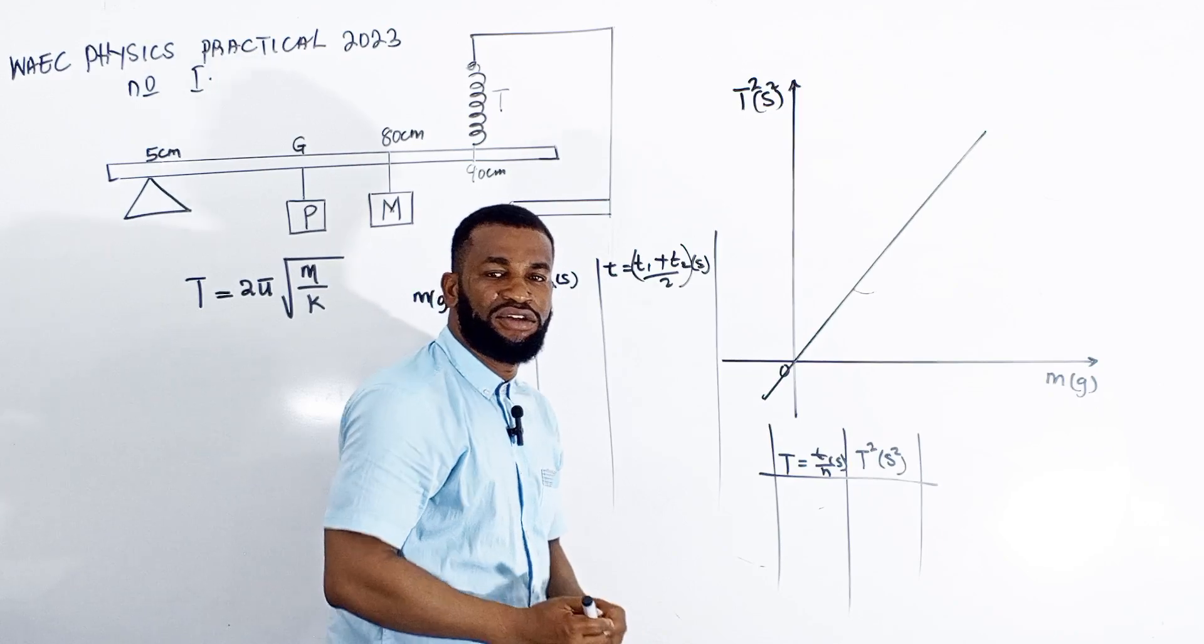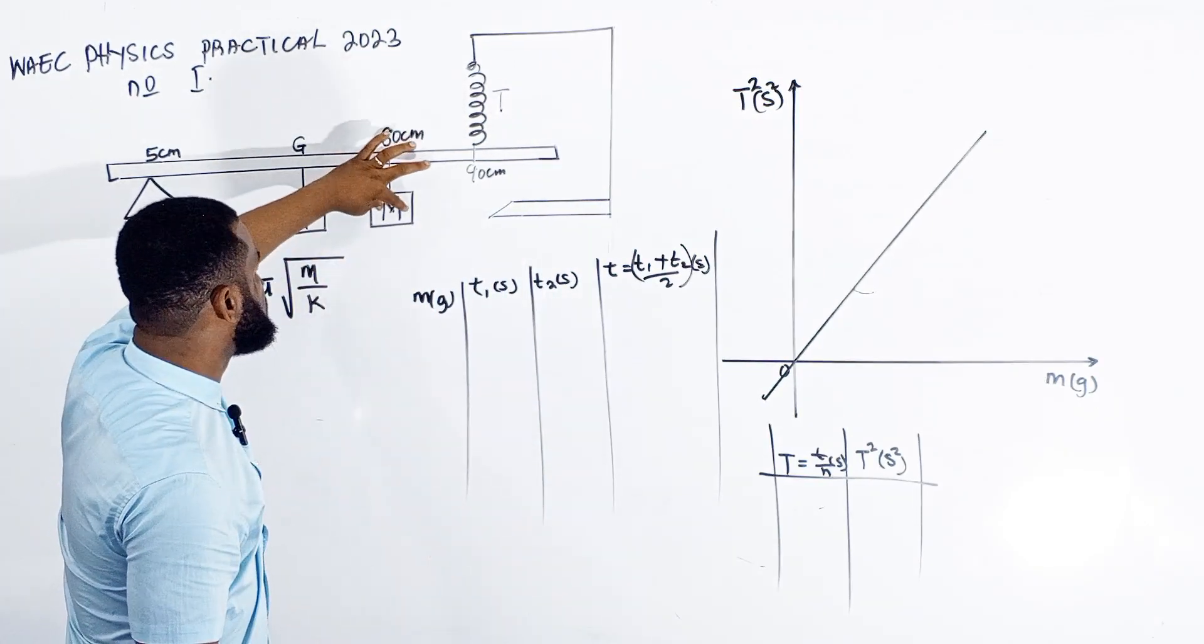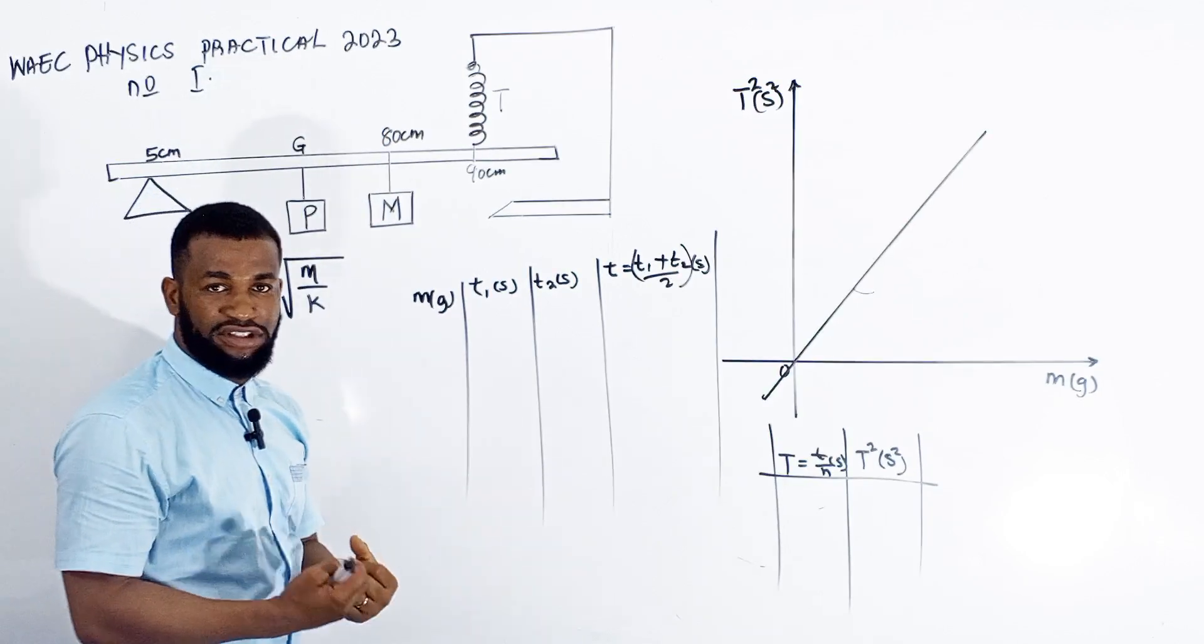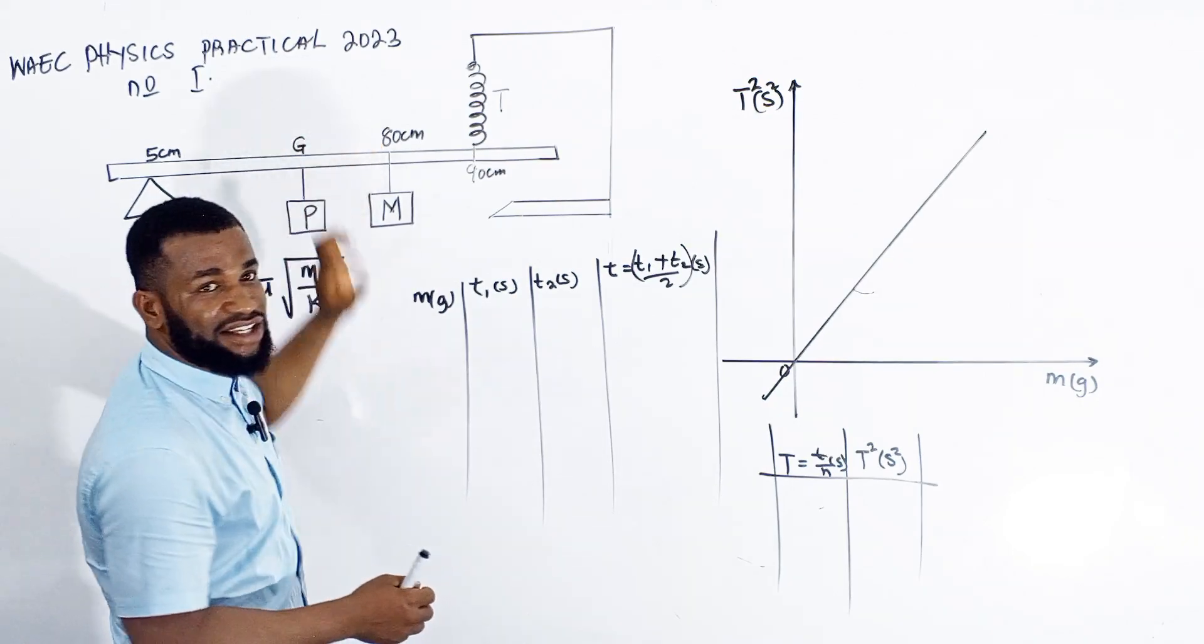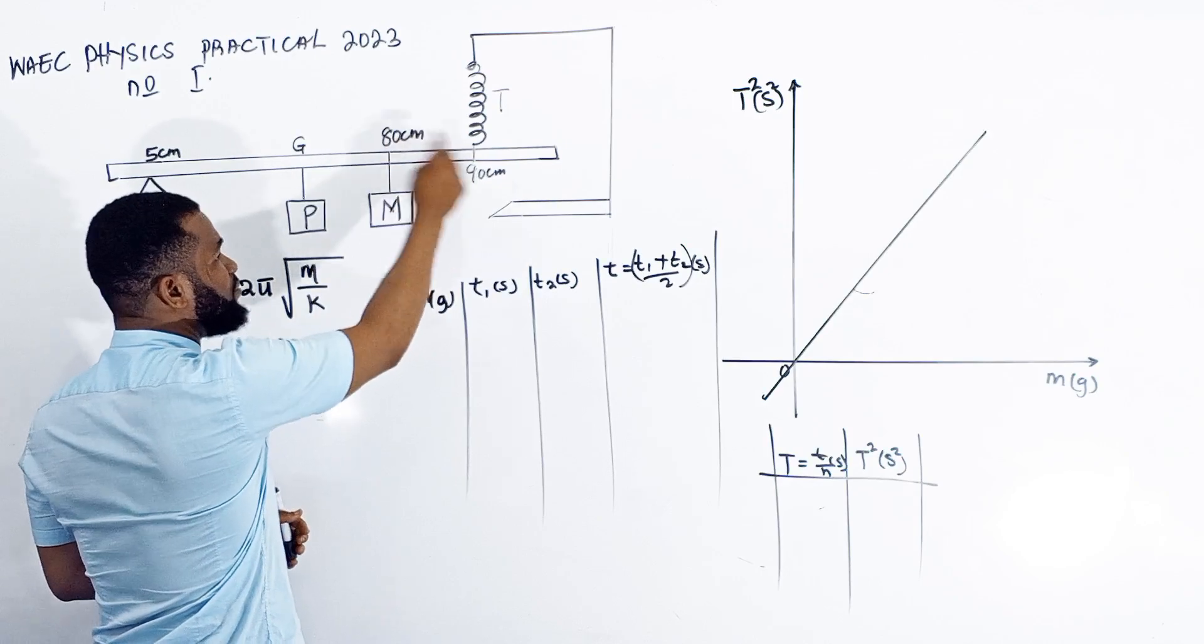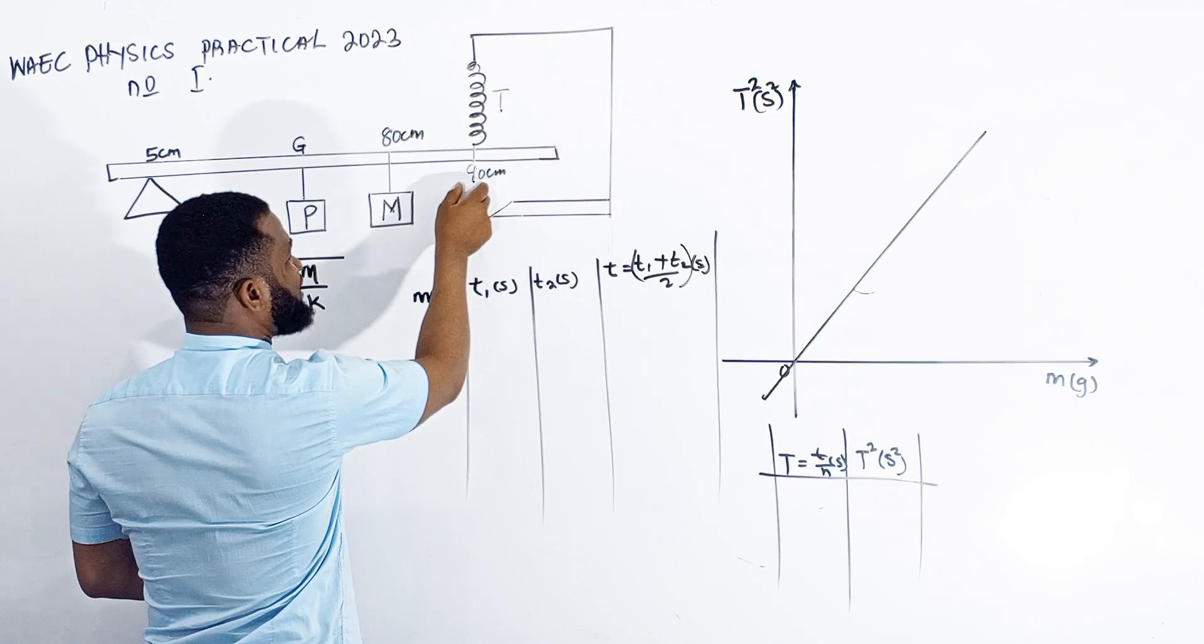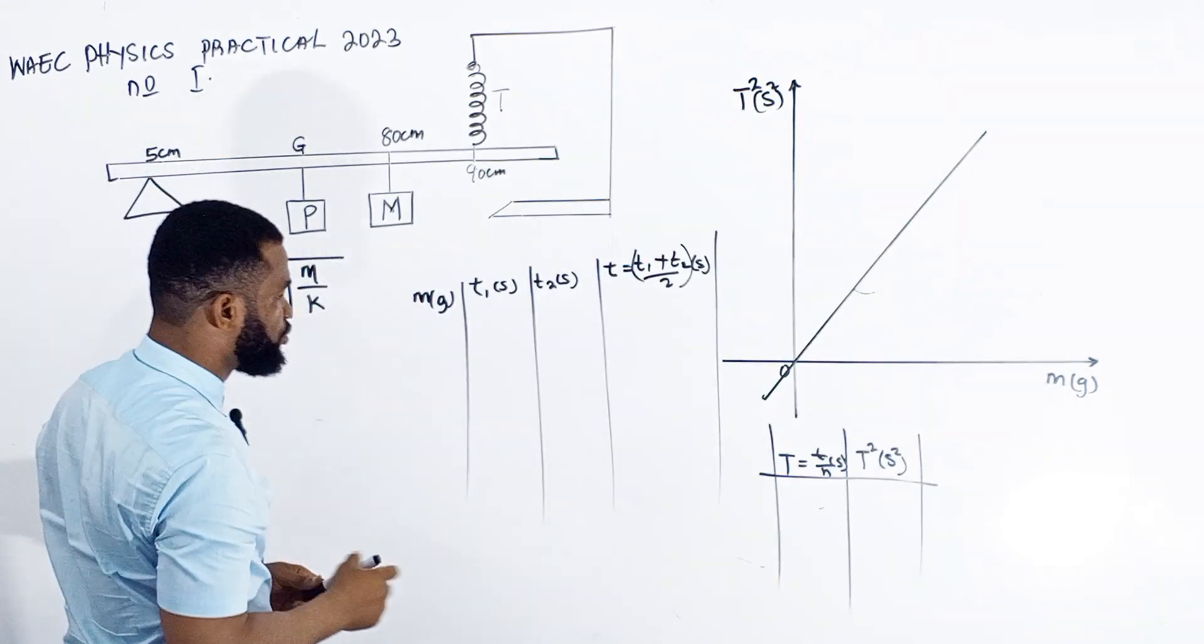What you're going to do is slot in 20 grams here using a mass hanger or tape to secure it tightly. This is at 80 cm, which is 10 cm from the helical spring, while this is at the 90 cm mark and this is at 5 cm.